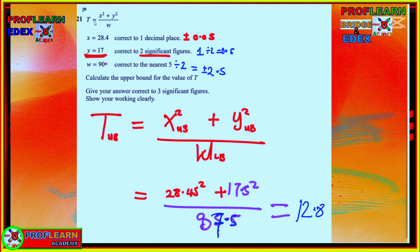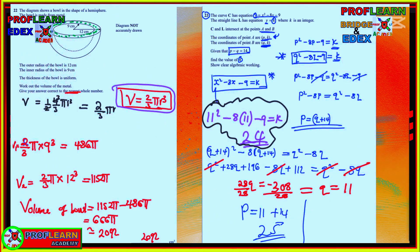Another question that made students cry involves T = (x² + y²) / w. x is correct to one decimal place, so its absolute error is ±0.05; y is correct to two significant figures, so ±0.5; w is correct to the nearest 5, so ±2.5. To find the upper bound of T, use upper bounds of x and y divided by the lower bound of w. The answer is 12.8.